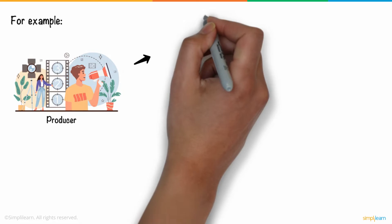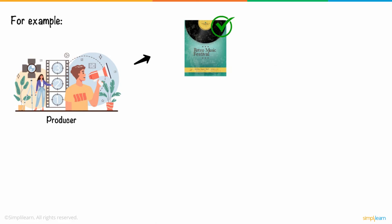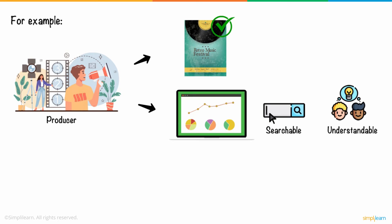For example, producers can review, approve, and make changes in real time. And video indexing makes the album searchable and understandable. Predictive analytics makes the most of marketing and distribution strategies.